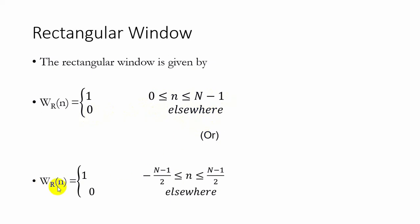Or w_r of n is equal to 1 if n ranges from minus n-1 by 2 to n-1 by 2, 0 elsewhere.